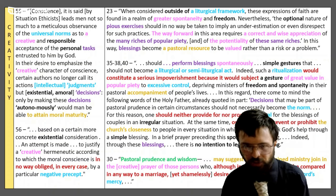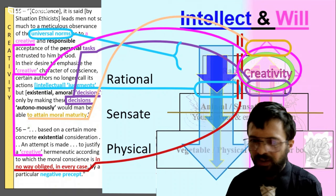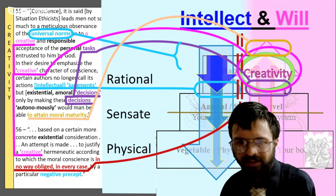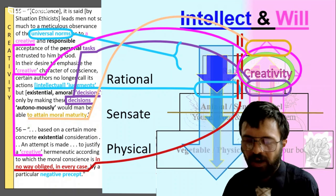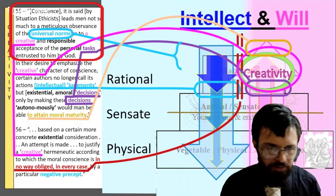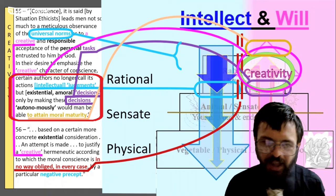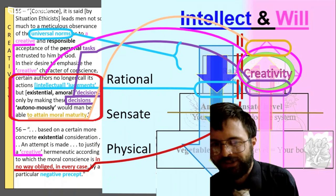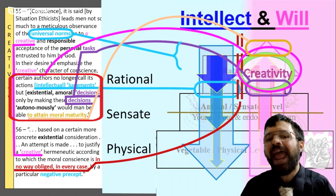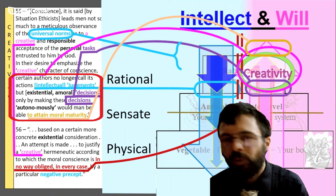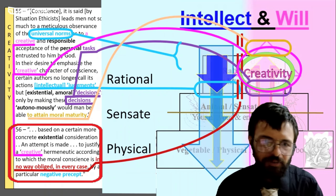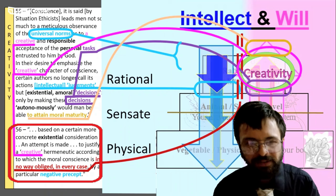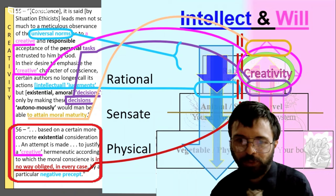Next is creativity — where is that in Fiducia Supplicans? To review: creativity is in the will up there, and we're going to over-focus on the will so we don't have to focus on intellect, where principles, judgments, and precepts are. Conscience leads not so much to focus on norms as to a 'creative and responsible acceptance of tasks,' and we won't call conscience acts 'judgments' anymore — just 'decisions' — because really we're not using our conscience, we're just deciding unconsciously. That way we can attain moral maturity in those broad sunlit uplands where we're not restricted by norms and precepts. Based on this more existential attitude and hermeneutic, we can justify a creative mindset so that we're not obliged by precepts.